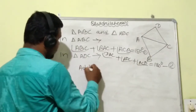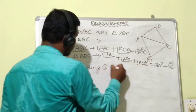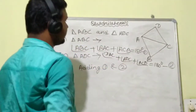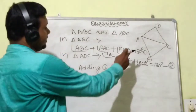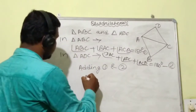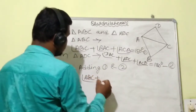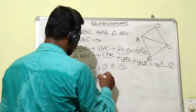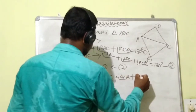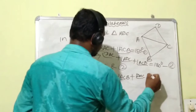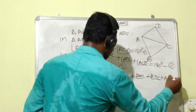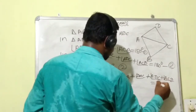Now, dear students, we will add equations 1 and 2 — adding the left sides together and the right side values together. That gives: angle BAC plus angle BAC plus angle ACD plus angle ACD plus angle ADC, equal to 360 degrees.